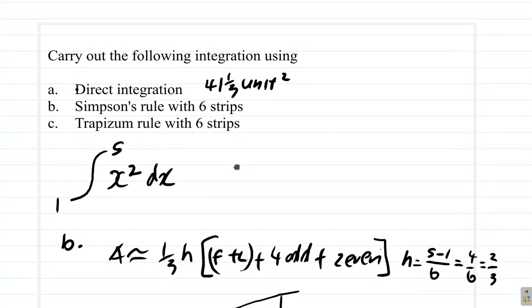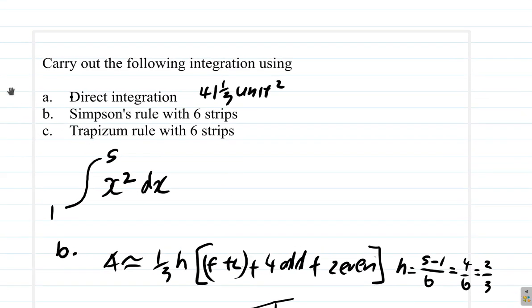So with 41 and 1 third we get back the exact value, 41 and 1 third square units. Good.